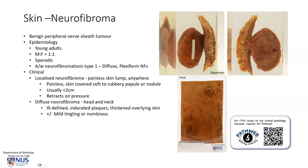The diffuse neurofibroma occurs more often in the head and neck. It arises as an indurated plaque or thickened overlying skin. There may also be some neural symptoms like paresthesia, tingling, or numbness.